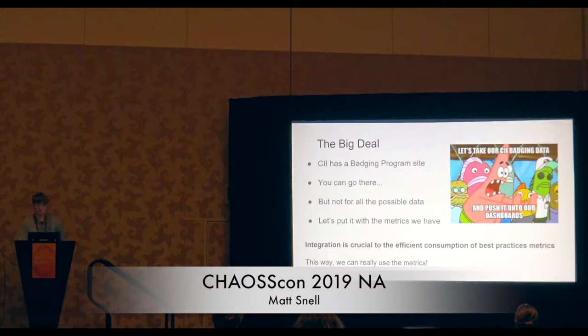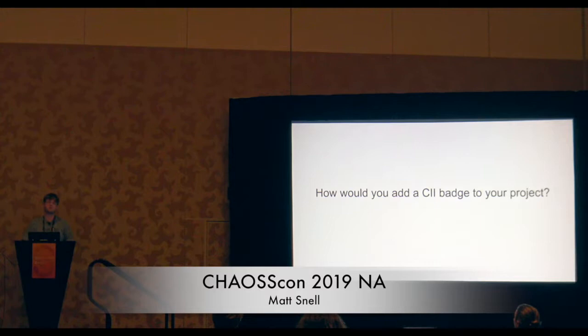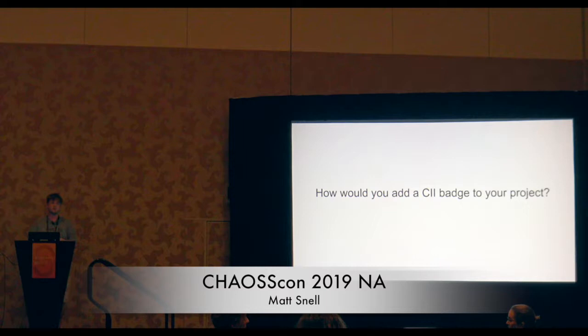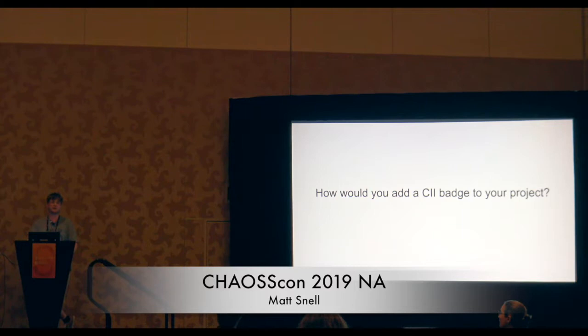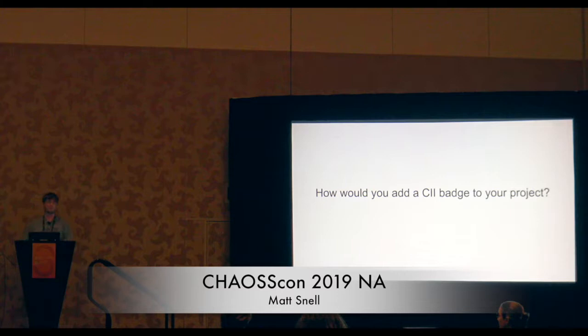I wanted to open some extra time to ask: how would you add a CII badge to your project, especially in metrics projects? So I put the badge in the GitHub readme as an image, and I have one. A lot of that is just the process of embedding it in your readme — you just request to have a review of your project with the CII, and they can get you a badge to work with.